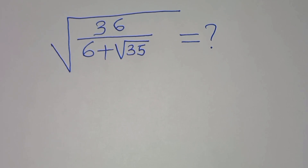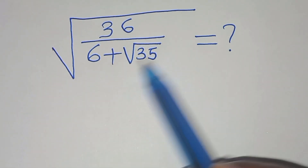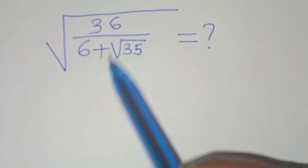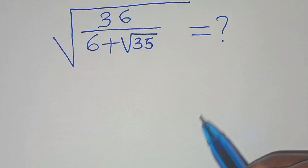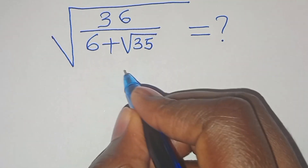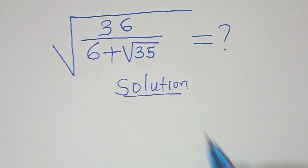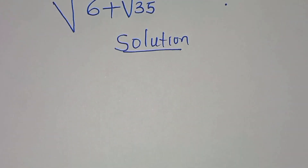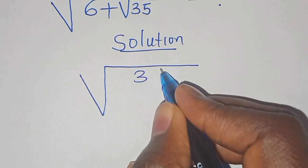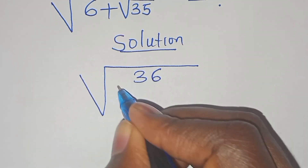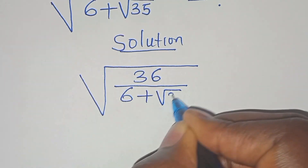Hey everyone, you are welcome to solve this nice math problem, which is the square root of 36 divided by 6 plus square root of 35. So let's provide a solution. We have the square root of 36 divided by 6 plus square root of 35.